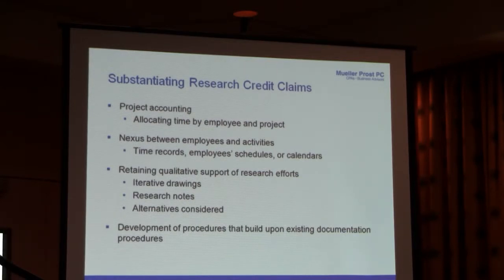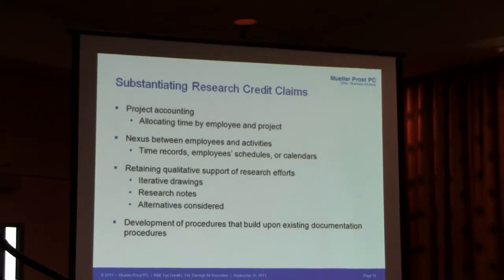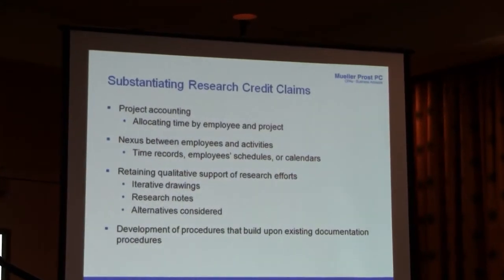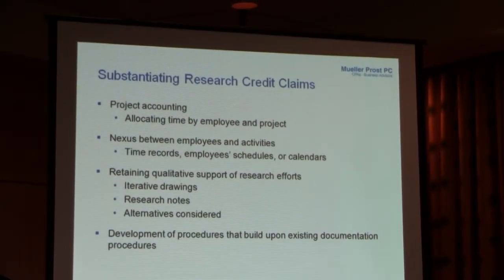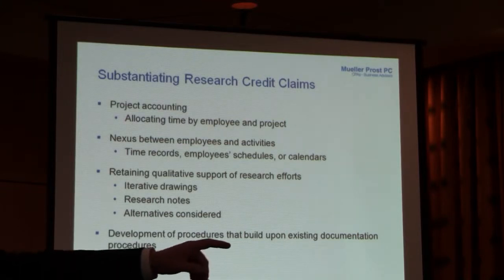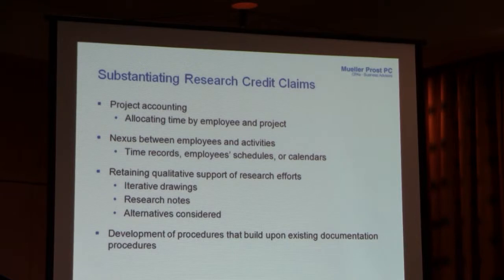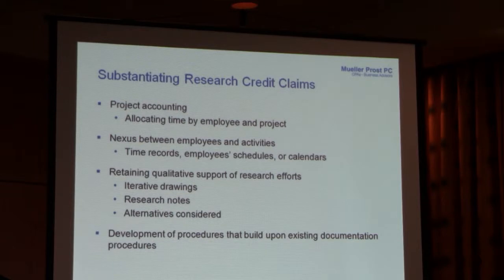Substantiating research credits is important. What we generally do is allocate employees' time by project. For a machine shop doing 3,000 projects a year, the law of diminishing returns says you're not going to track every half hour per project. So we lump them into different product categories — very difficult technological projects, middle-ground projects, and easier projects. Easy projects might not even qualify. The key is to identify the different business components and where time is being spent.